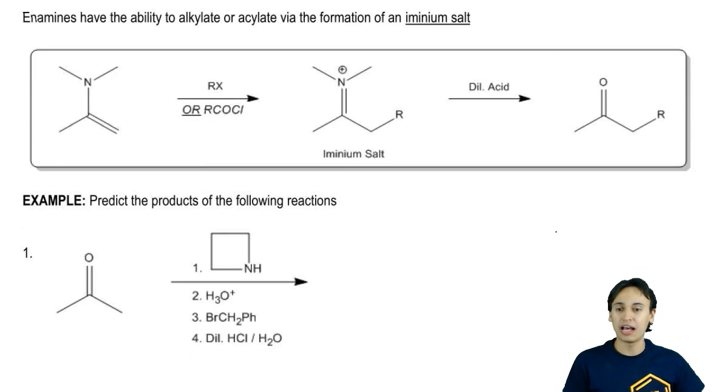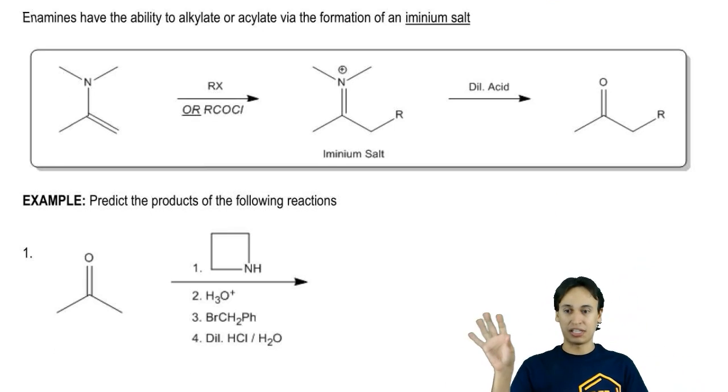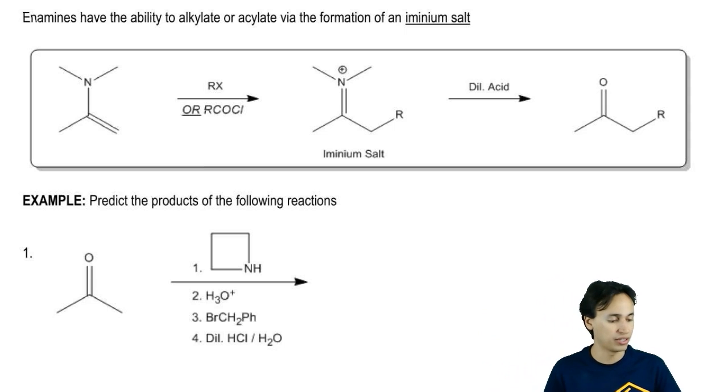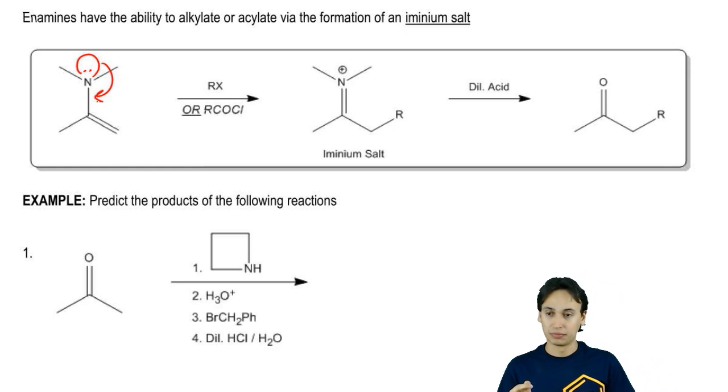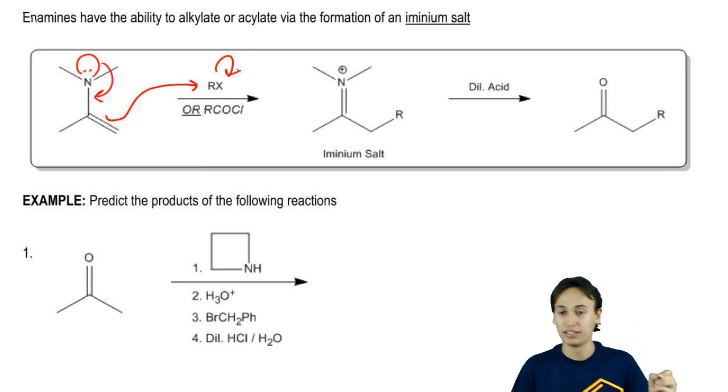Enamines have the ability to alkylate or acylate via the formation of an iminium salt. What essentially happens is that you have your enamine and you have an electrophile. Let's just say that it's an alkyl halide to keep it easy. What happens is that the lone pair from the nitrogen can come down to make a double bond. You make that bond. You break a bond. You take this double bond and you attack the alkyl group with it because it's electrophilic.